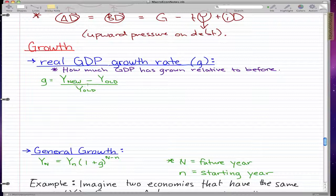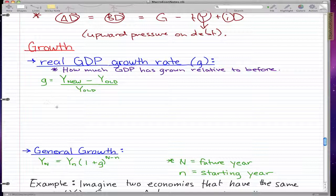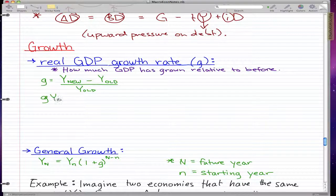So G is equal to Y new minus Y old over Y old, where Y old could be the last year and Y new is this year. And we can manipulate this formula by multiplying both sides by Y old.